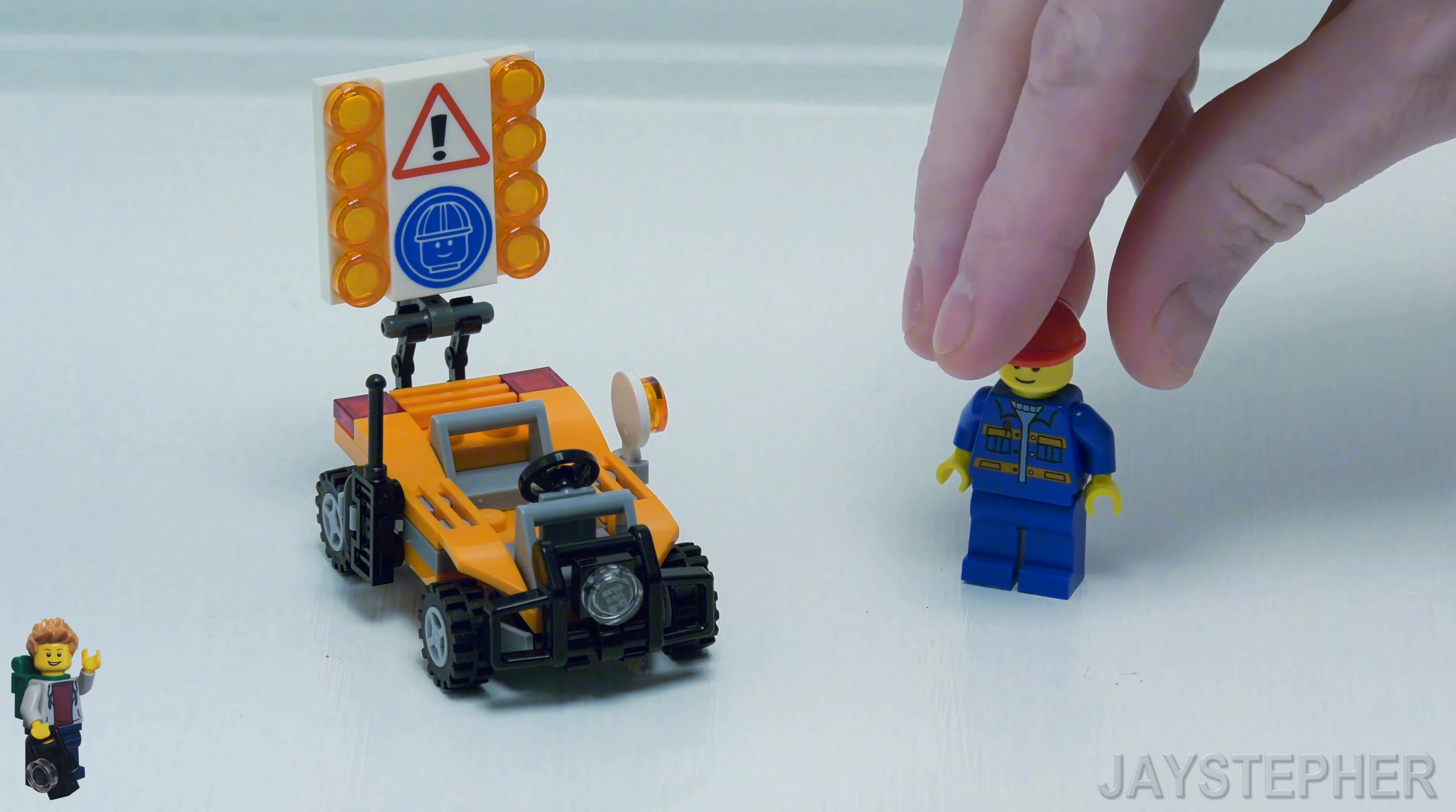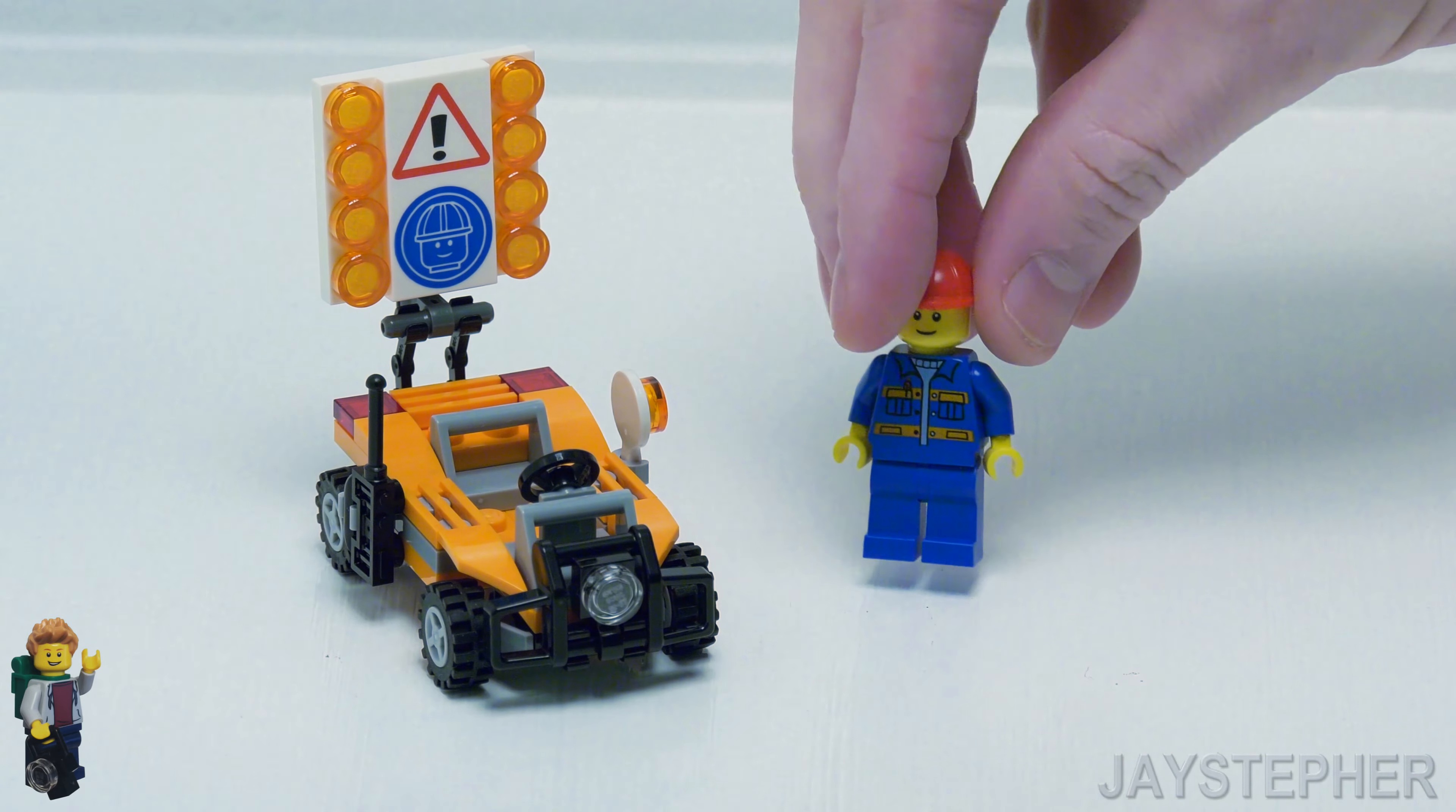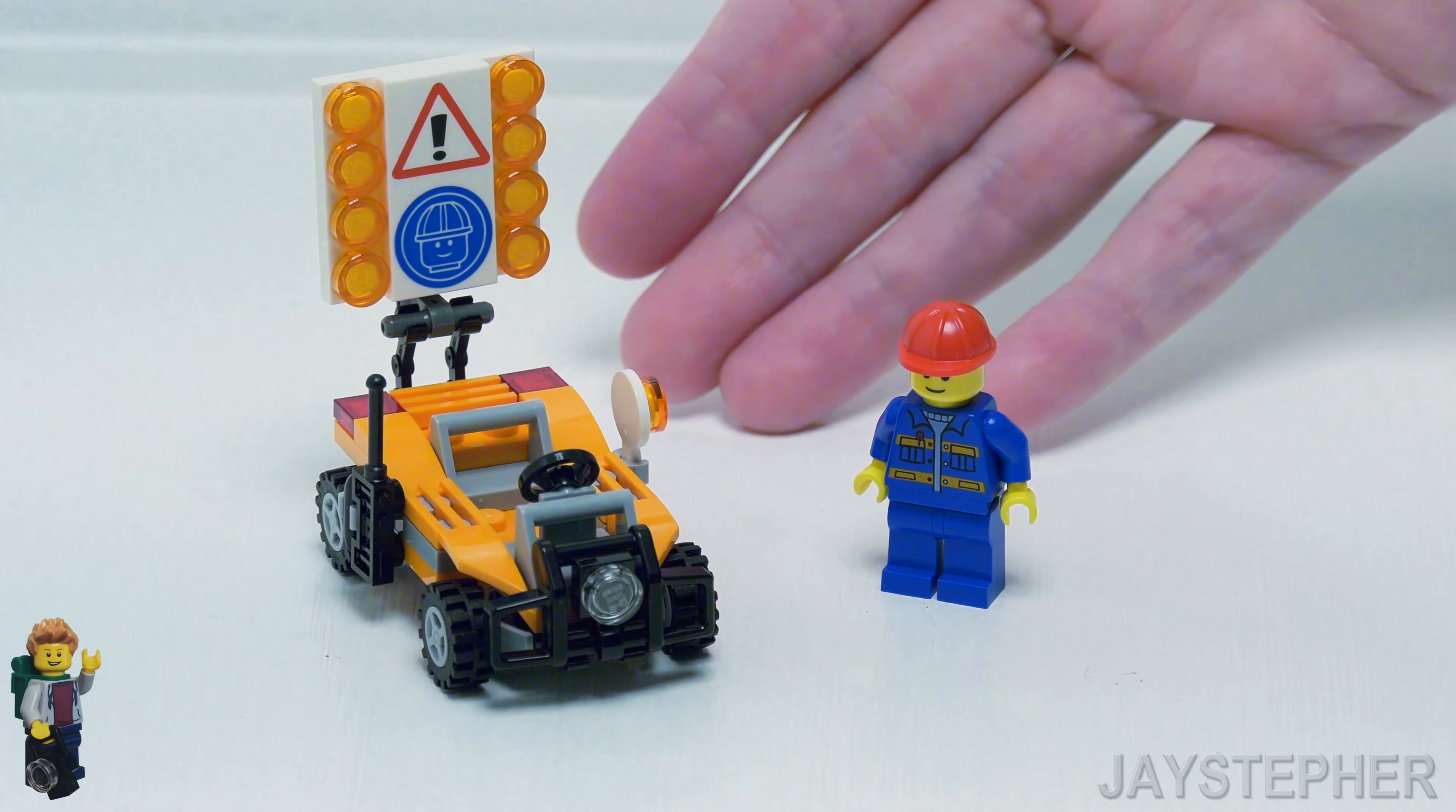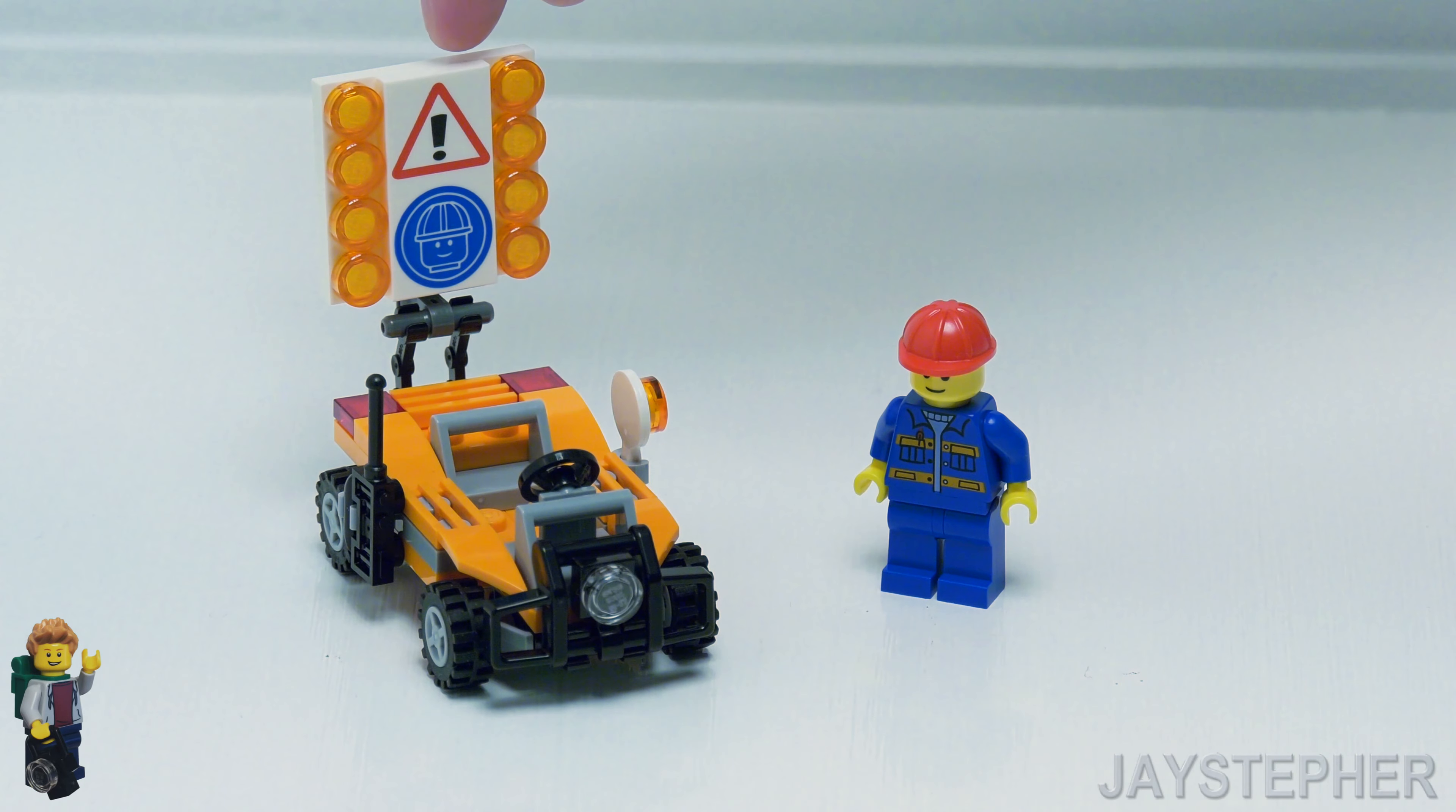On the right we have our city road worker. Single-sided head. Nice printing for the torso. On the left we actually have a small ATV. And I like the printed signs.